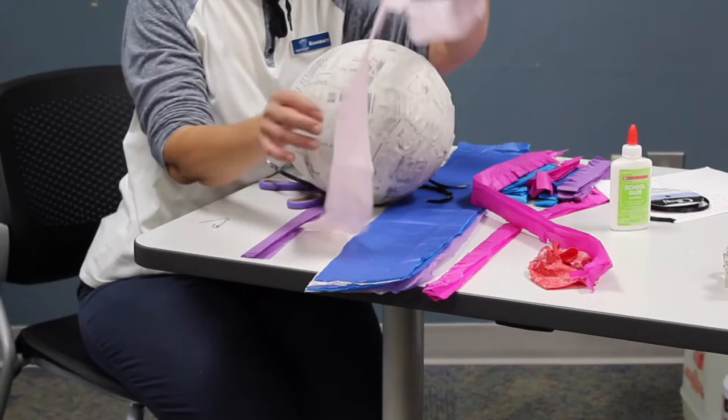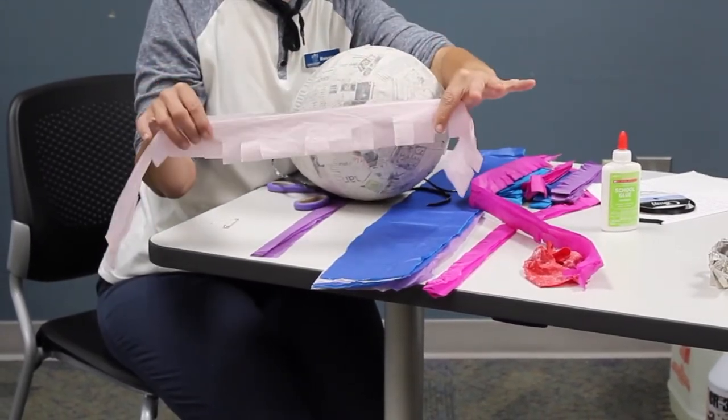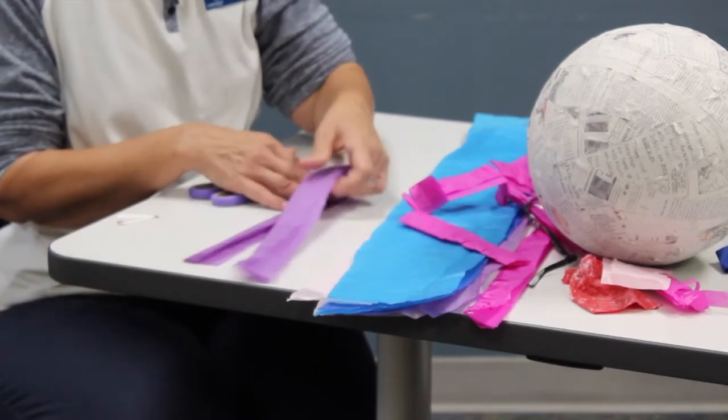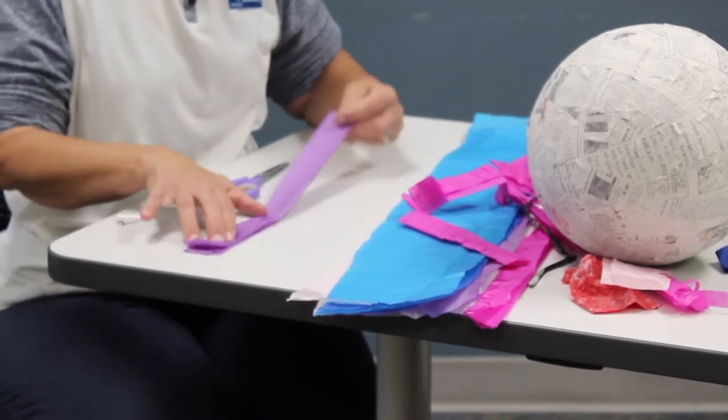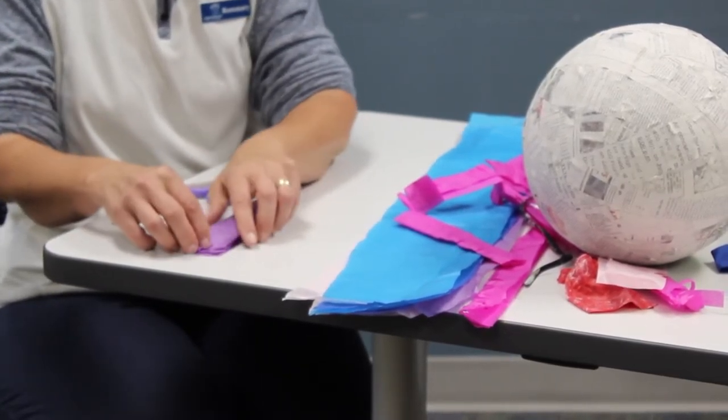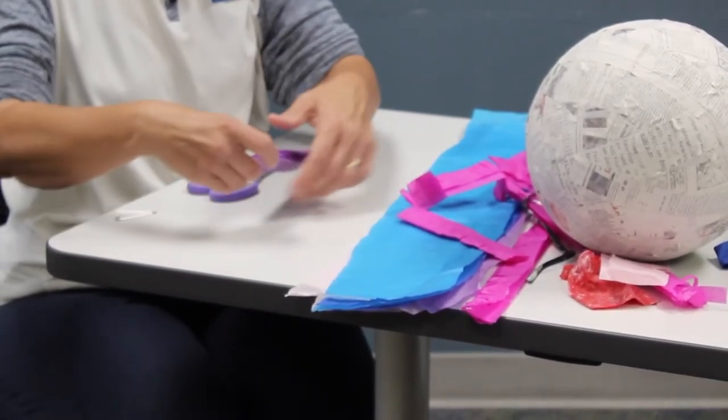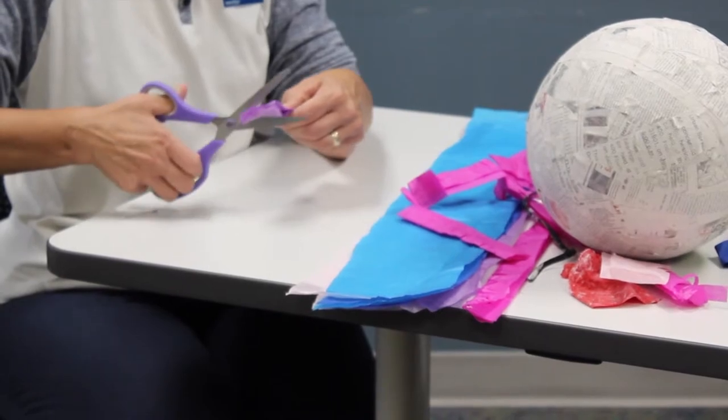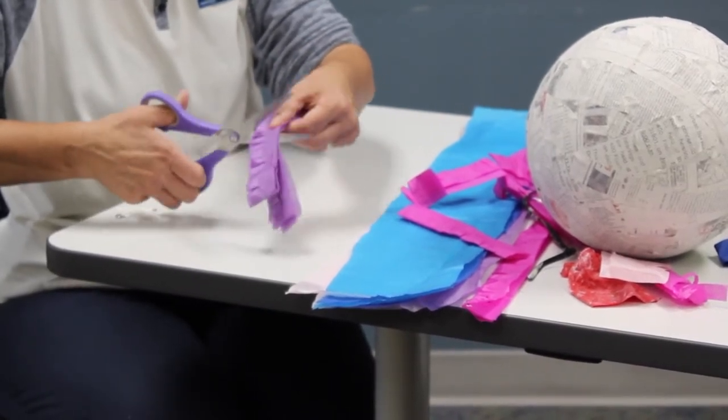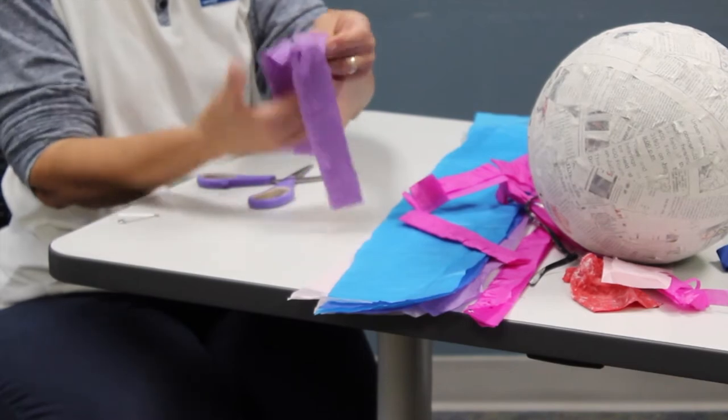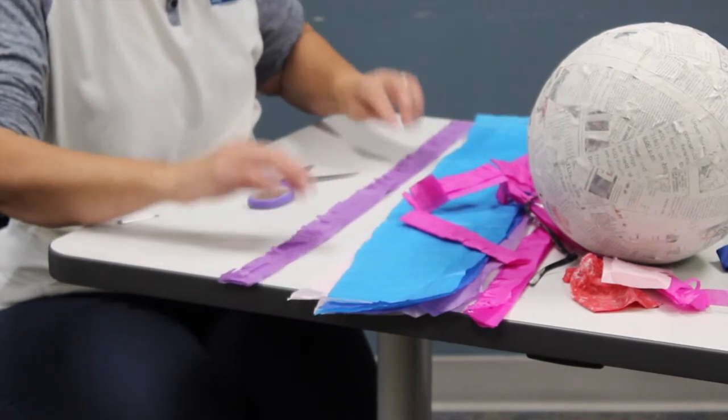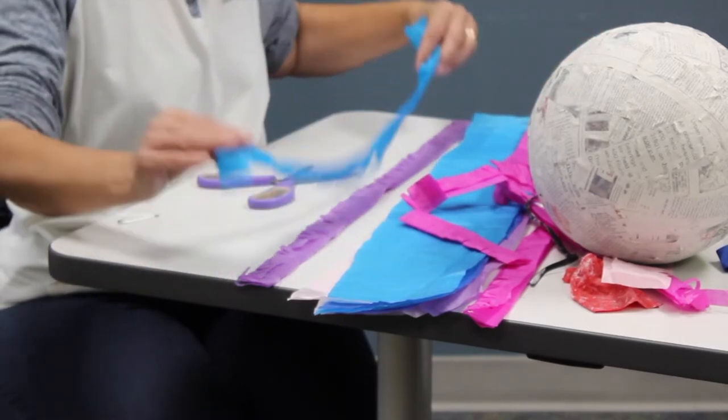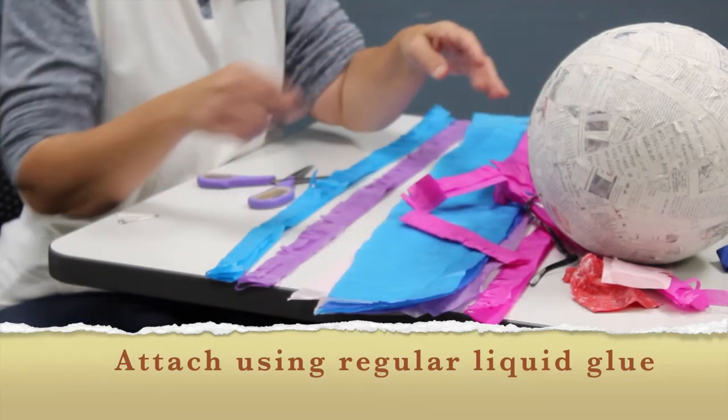So let me show you a faster way to do these fringes. We're going to fold it in half, and then fold it in half again and a quarter. The folds are towards you. So don't go all the way to the edge so that when you're done, it stays in one piece. And you want to make lots of these like I did. We've got blues and purples. And the next step would be to glue it onto the piñata.